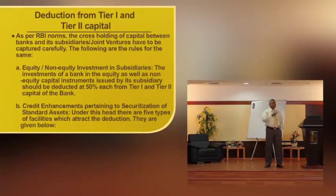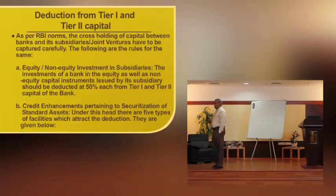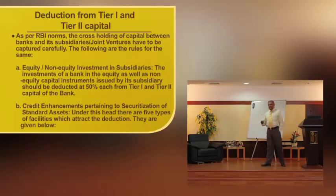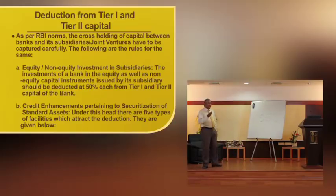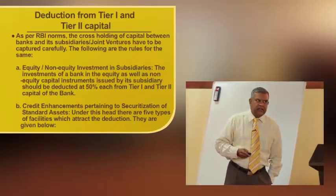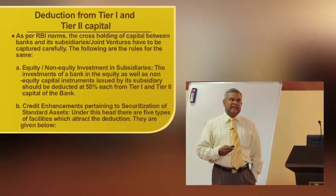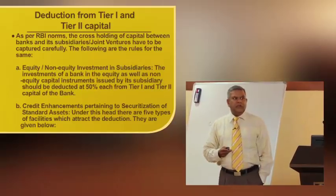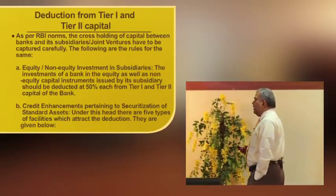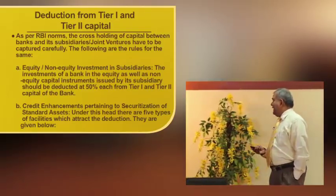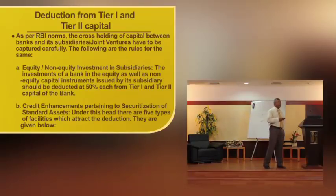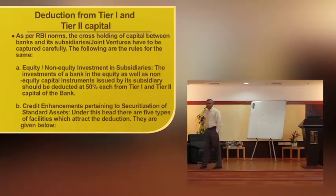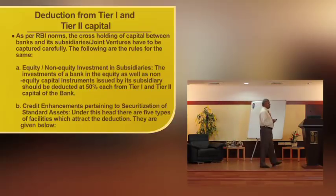We have discussed the components of Tier-1 and Tier-2 capital. Because of cross-holdings between banks — as most public sector banks have capital contributions in RRBs, joint ventures, and subsidiaries — this cross-holding of equity is to be deducted from the net worth of banks. As per RBI norms, the cross-holding of capital between banks and their subsidiaries or joint ventures must be captured carefully. The investment of a bank in equity as well as non-equity capital instruments issued by a subsidiary should be deducted equally — 50% from Tier-1 and 50% from Tier-2 capital. Securitization transactions with cross-holdings are also covered by RBI norms.